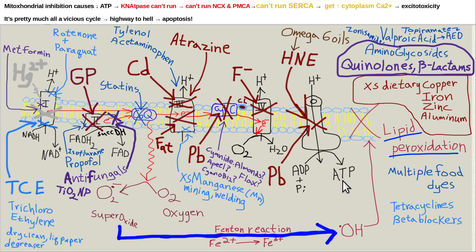ATP is like the $20 bill for getting things done inside a cell — it's the energy source for making things happen. Dietary fat, especially saturated fat, inhibits complex 3 and that causes insulin resistance, which causes diabetes. That's the main cause of diabetes right there.